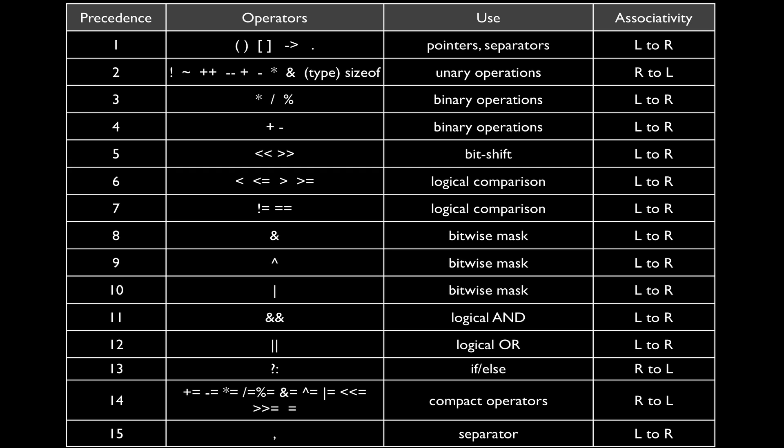So I've taken all of the operators in the C language and put them in a table here. Now, many of these we haven't talked about yet, but we will. But you can keep this as a handy reference in terms of precedence. And in this chart, precedence is increasing from highest to lowest.